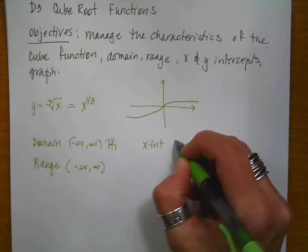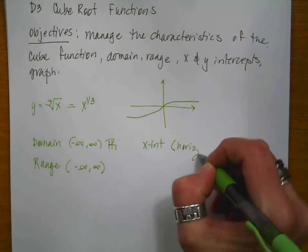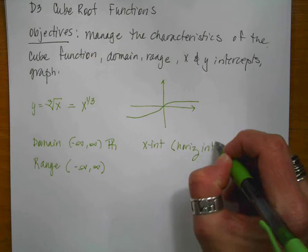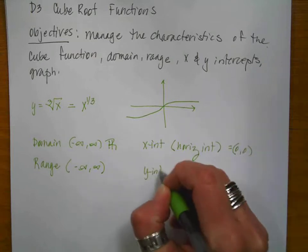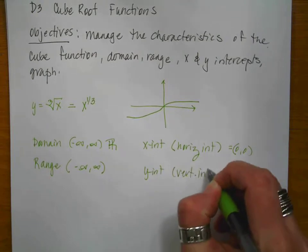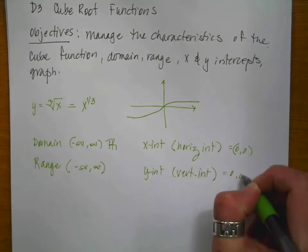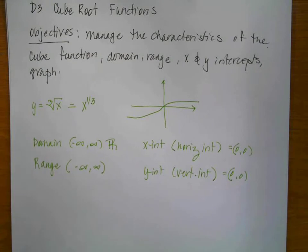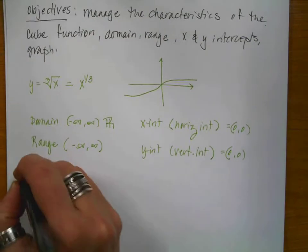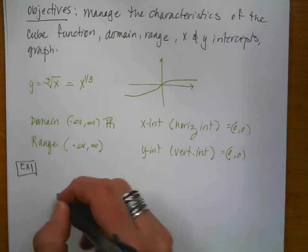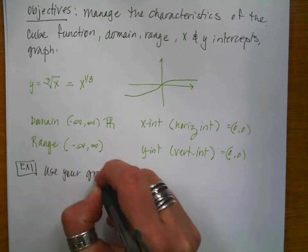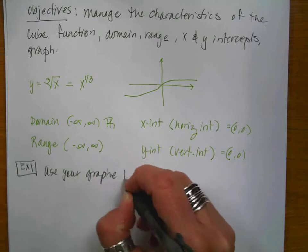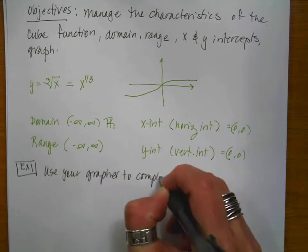My x-intercept, remember this particular set of worksheets calls it the horizontal intercept, is going to be 0,0. And the y-intercept, which is the vertical intercept, is also going to be 0,0. So let's do our first example. We have a nice short video today. We like short videos. So it says, for the first example, use your grapher to complete the table.